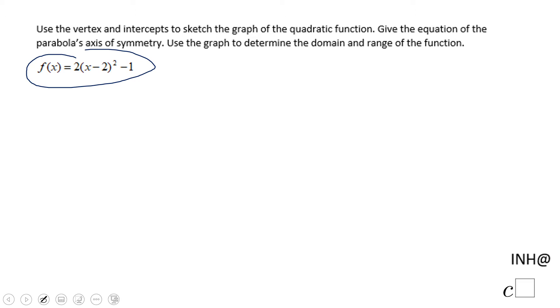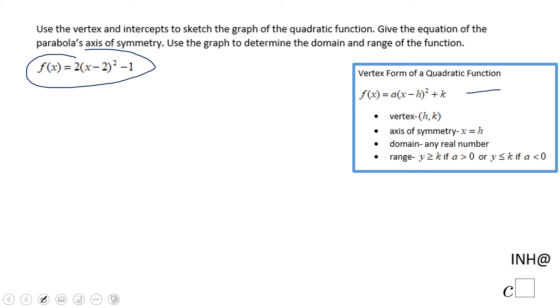We need to find the vertex. This is the vertex form so we just match the things and what do we get? h equals 2 and k equals negative 1. That's the vertex, 2 and negative 1. The axis of symmetry is going to be x equals 2.